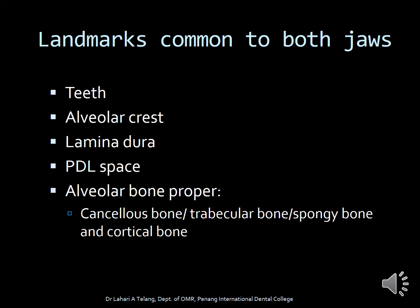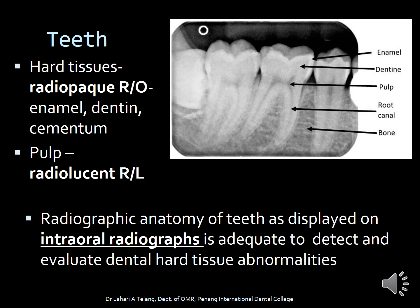The landmarks common to both jaws include teeth, alveolar crest, lamina dura, PDL space, alveolar bone proper consisting of cancellous bone, and the cortical bone. Teeth are hard tissue structures and hence are radiopaque. The radiopaque parts are the enamel, dentine, and cementum. The difference between cementum and dentine is hard to differentiate because their mineral content is nearly the same. The pulp is the radiolucent part of the tooth, located in the center, containing soft tissue, nerves, and blood vessels — which explains why it is radiolucent.